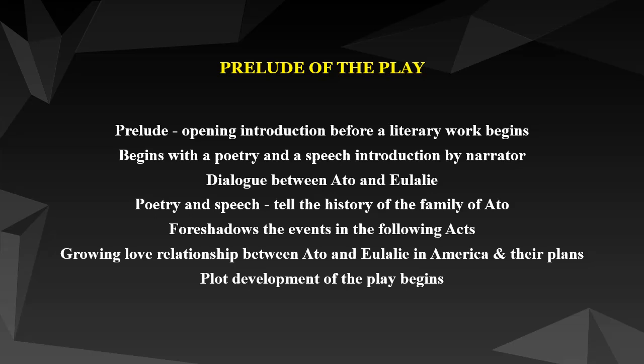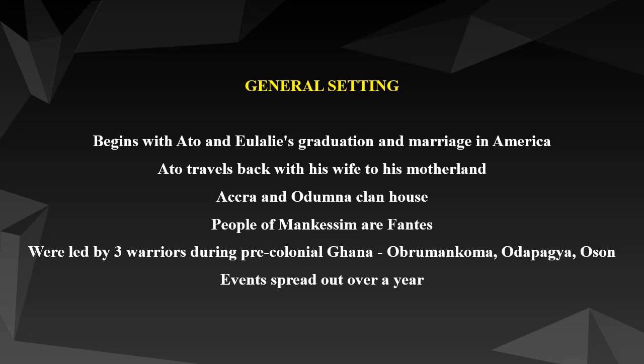The plot development of this play begins right from the prelude. We see Eulalie talk of her perception of Africa and African women and family: 'I suppose African women do not talk.' Also, Ato assures her that childbearing can wait, irrespective of social norms and expectations of couples in Africa: 'Look at me, we shall postpone having children for as long as you would want.'